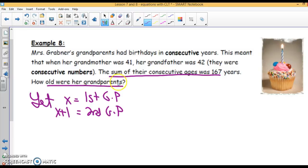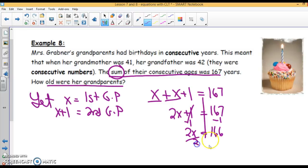It says the sum. Sum means the answer to an addition problem. So the sum of their ages. The first one is x. The second one is x plus 1 equals 167. So let's solve this. x plus x is 2x, bring down the plus 1 equals 167. Remember when you solve the equation, you need to simplify. Now to solve this, I subtract 1 from both sides. So 2x is 166. Divide both sides by 2. So x is 83.